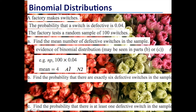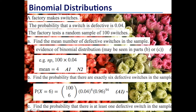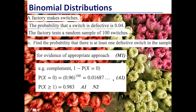Part C: find the probability that there is at least one defective switch in the sample. At least one is most easily found as one minus no defective switches: 1 minus 0.96 to the power of 100, which gives a probability of 0.983.